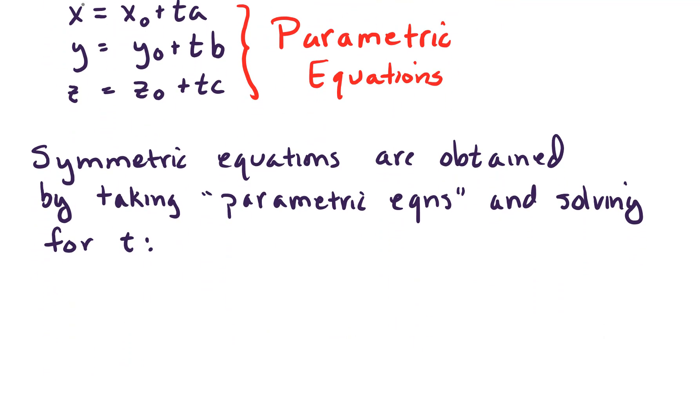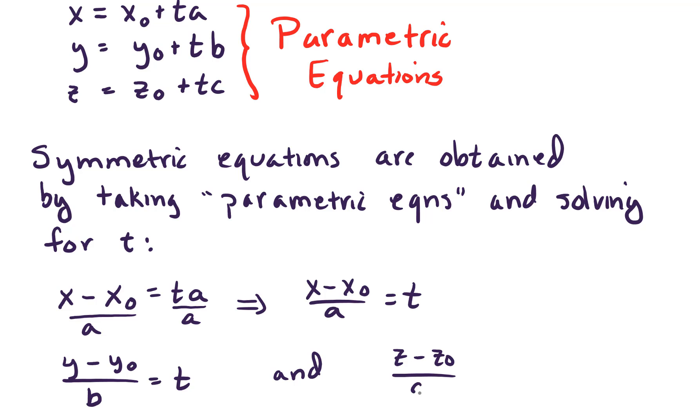So starting off with our parametric equations, we will solve each of those for T. So first we have an equation for X, so moving everything to one side, we'll have X minus X-naught equals T times A. Dividing by A on both sides, that leads us to saying X minus X-naught over A equals T. Similarly, we end up with Y minus Y-naught over B equals T. And lastly, Z minus Z-naught over C equals T. Now look at this, we have three equations, they're all set equal to T.